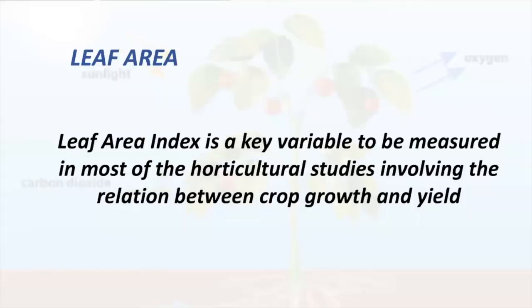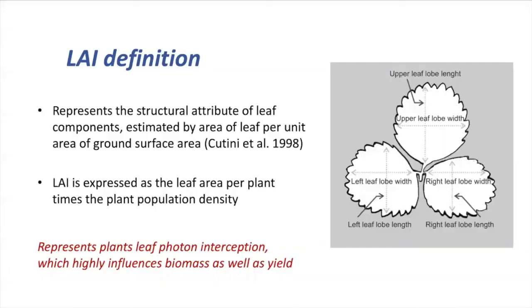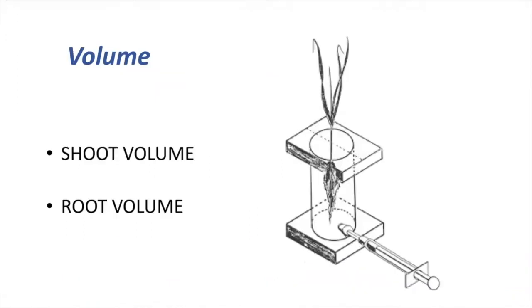Then we have leaf area index. This variable is useful when trying to link growth to yield. It represents the plant's leaf area for light interception and its impact on biomass and yield. Leaf area index is expressed as the leaf area per plant times the plant population density. Then we have volume. Volume can also be used to measure growth, and we usually use this variable to measure root growth and shoot growth. It is difficult to get a precise measurement for root growth, so a good option is to get the volume from this plant organ.